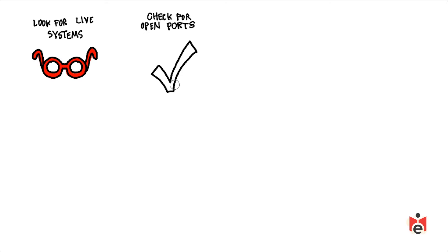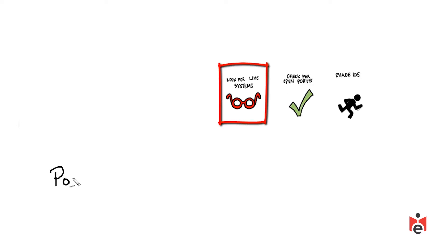The next step once we identify live hosts is to identify what services or ports are open on those systems. Why would we care? If they have port 80 we know they have some type of web service; port 21 likely means FTP. There are lots of traditional and not-so-traditional methods we can use to discover available ports on a system.